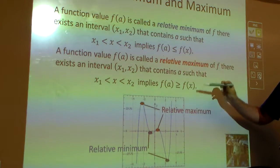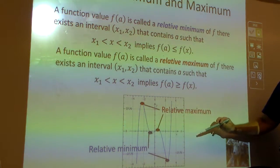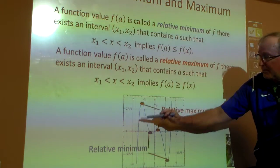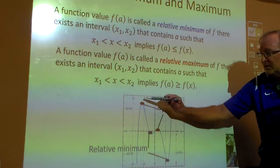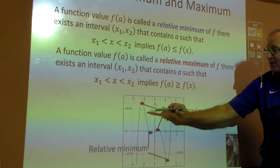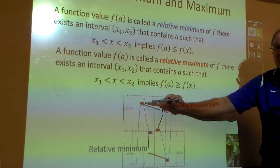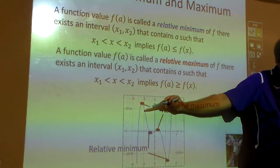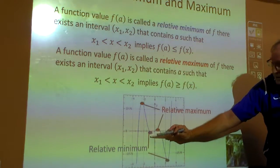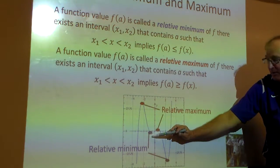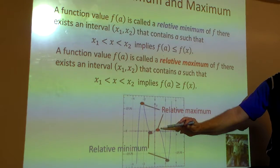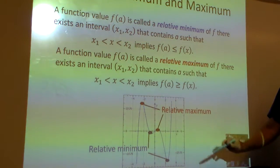So, we have what we call relative minimums and relative maximums. And here, it goes up and it turns, it comes back down. It goes from increasing to decreasing here, right? Well, that was a relative maximum, because in that relative area, that's the maximum value, correct? And also, here's a relative what? Minimum.